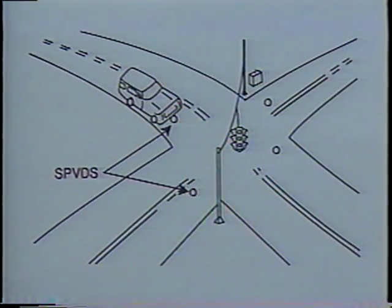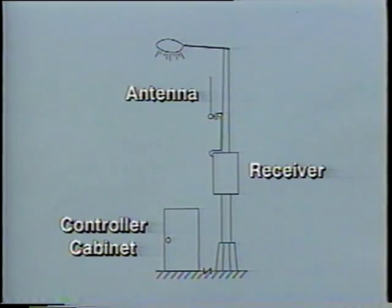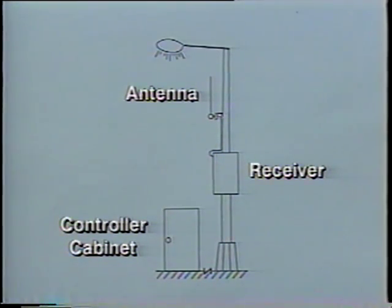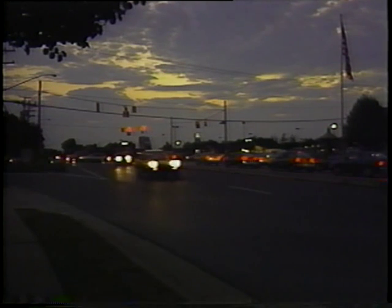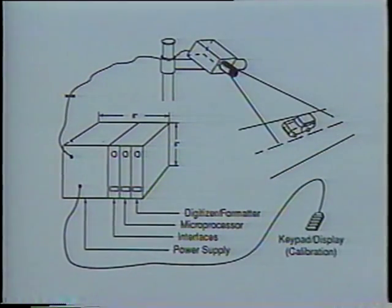One such system is the self-powered vehicle detector, or SPVD, which consists of a cylindrical in-road sensor containing a transducer, an RF transmitter with antennas, and a battery. The in-road sensor is powered by an internal battery and is connected to the relay by a radio link. The roadside receiver includes a commercially available FM receiver and a tone decoder electronics package. No lead-in or interconnecting cables are needed; this detector can measure vehicle passage, presence, count, and occupancy. Two SPVDs placed a predetermined distance apart can also measure speed.